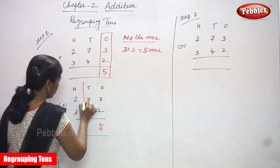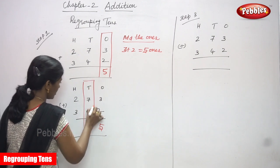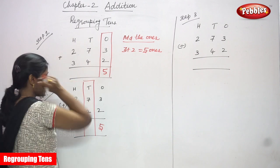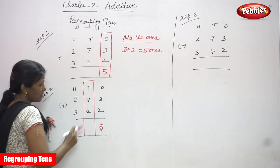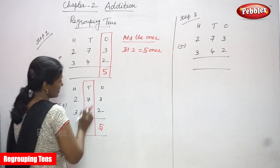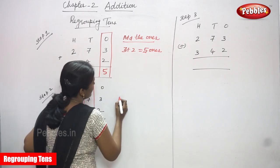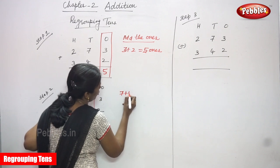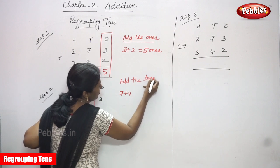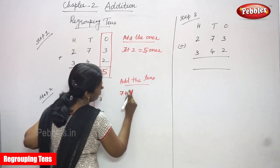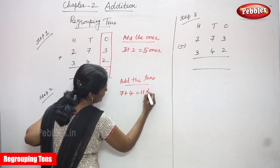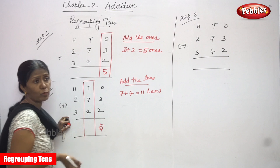Next, step two — we focus on the tens place. This is the regrouping tens step. What are the numbers in the tens place? Seven and four. We are going to add the tens: seven plus four.